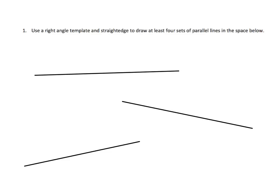In the first part, they say use a right-angle template and a straight edge to draw at least four sets of parallel lines in the space below. I have three examples here, and I drew these straight lines to represent straight edges. You're going to use these straight edges to guide your triangle templates. I'll represent one triangle like this — your set from class should have some grid lines within it. Put your right triangle flush against your straight edge, as represented here.